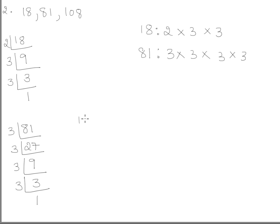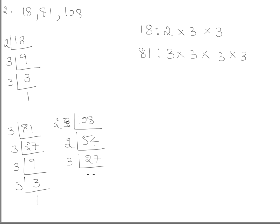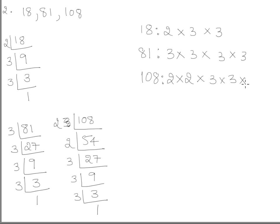For 108: it's even, so divide by 2 — 108 ÷ 2 = 54, then 54 ÷ 2 = 27. 27 is not even, so we try 3: 27 ÷ 3 = 9, 9 ÷ 3 = 3, 3 ÷ 3 = 1. So 108 = 2 times 2 times 3 times 3 times 3.